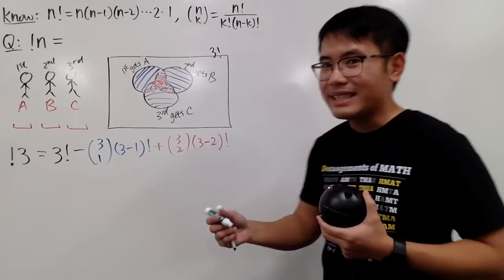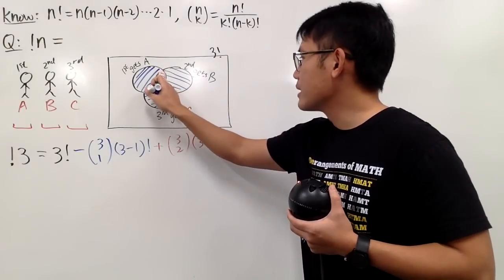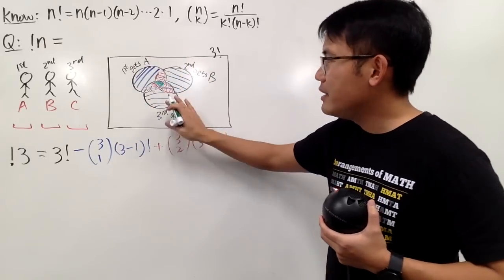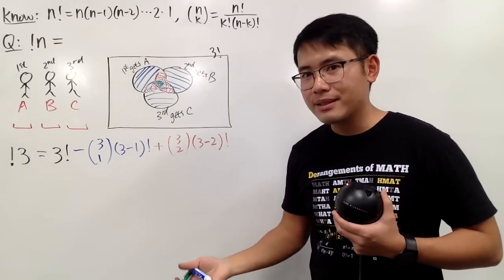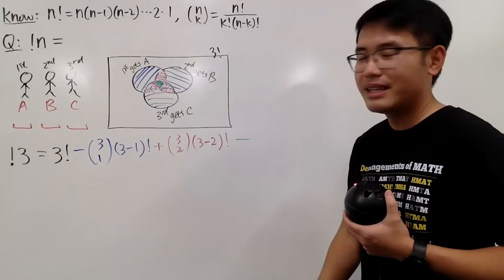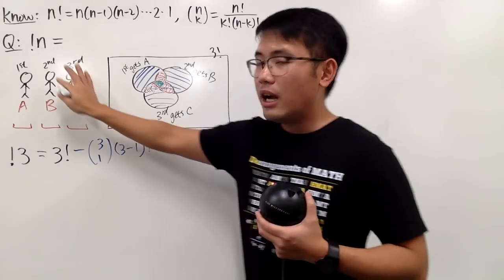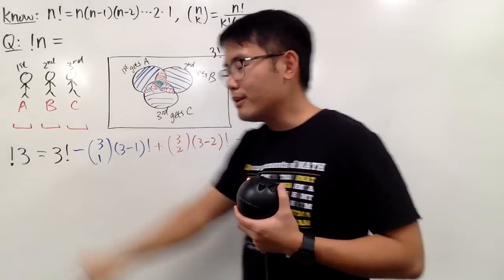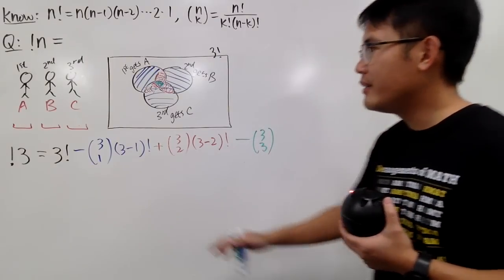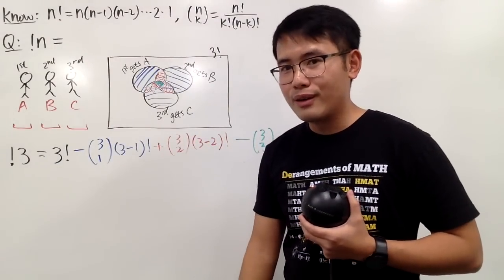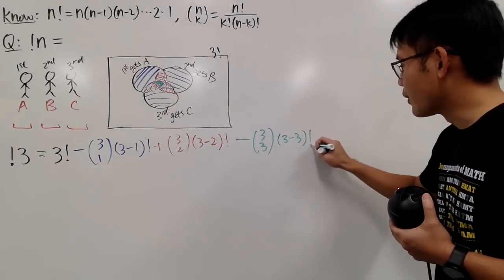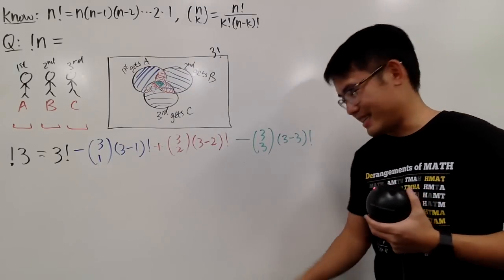This is called the principle of inclusion and exclusion, so you have to do minus, subtracting, plus, put back, then subtract — and so on. The last situation is the middle part: the middle part represents everybody getting their gift back. We have to subtract that because we put it back too many times. We select all three people — three choose three — they all got their gift back. And then do we have any left? No. I'll write it as three minus three factorial, which is zero factorial.